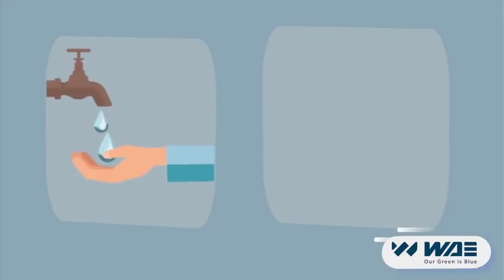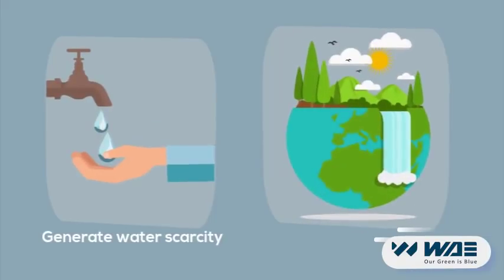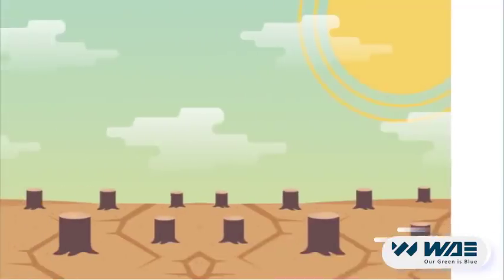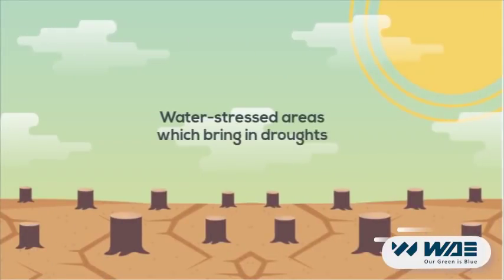Bottling plants generate water scarcity and impact ecological balance. They lead to water-stressed areas which bring in droughts.